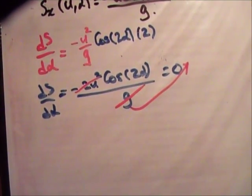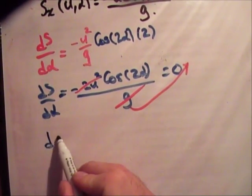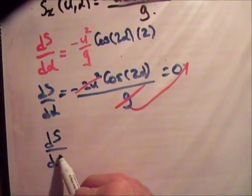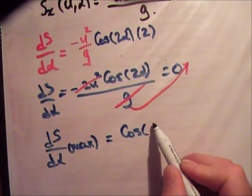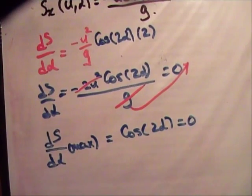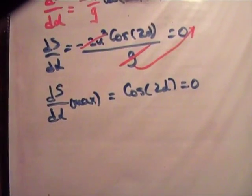So, what we're left with is that ds d alpha max is equal to cos 2 alpha is equal to zero.